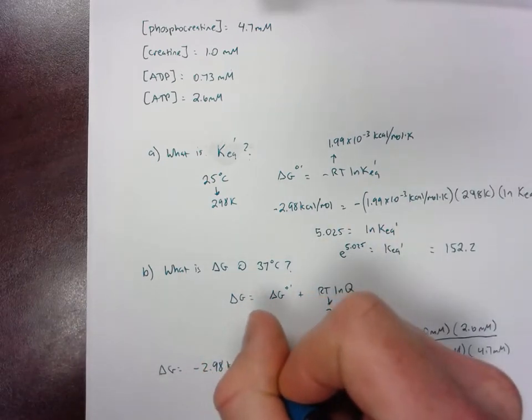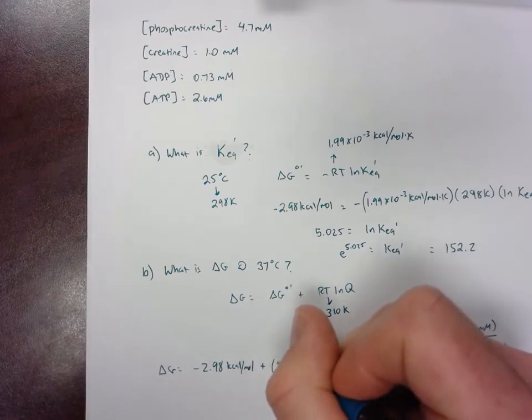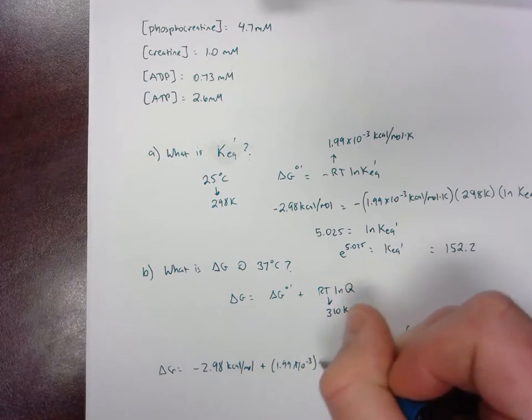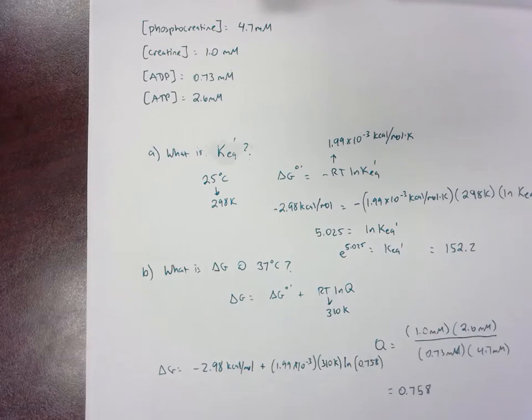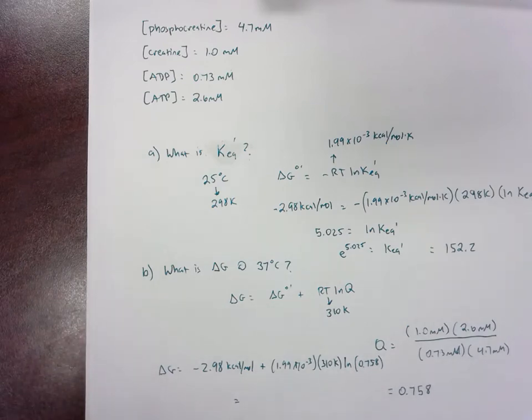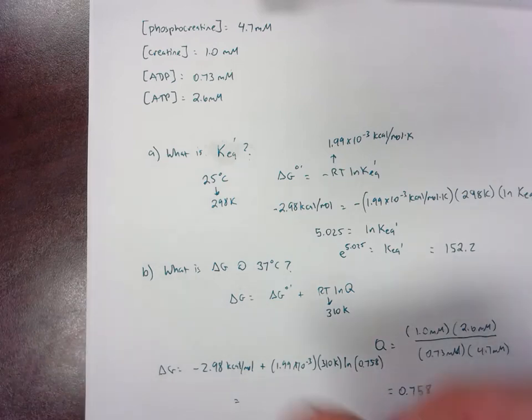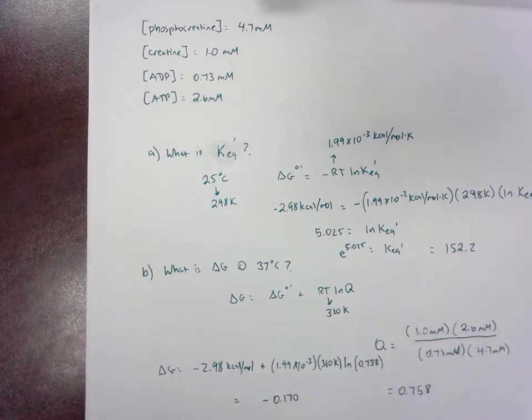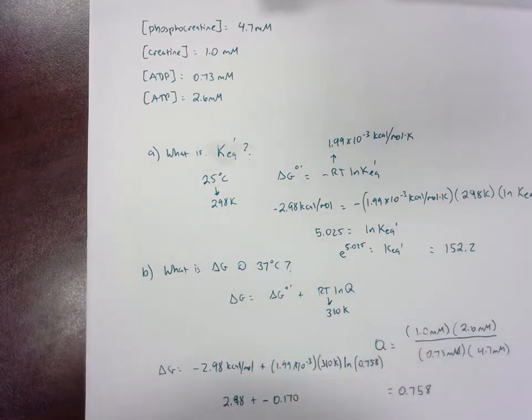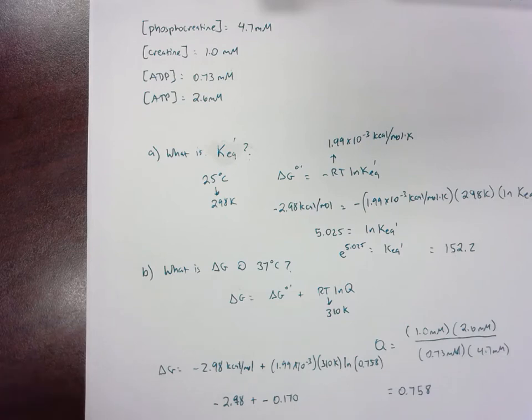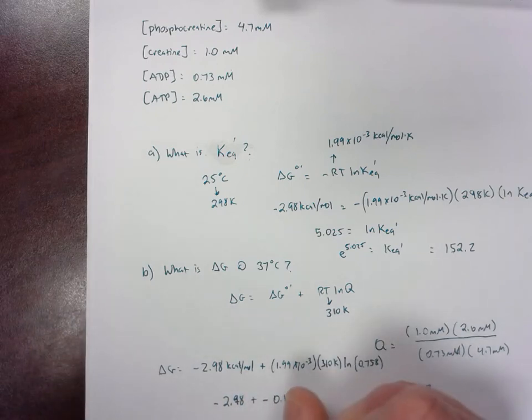Negative 2.98 plus R. R in this case, again, is 1.99 times 10 to the negative third. And then T is going to be 310. I'm running out of room. And then ln of 0.758. So we'll do that term here times 310 times natural log of 0.758. And this we get negative 0.170. We should do this, 2.98 plus that, negative 2.98 rather. And when we do that, we're going to get negative 3.15 kilocalories per mole.